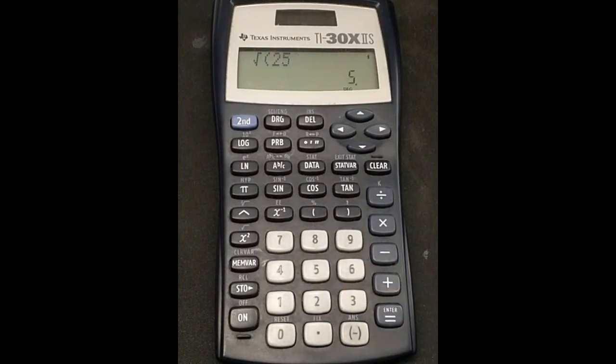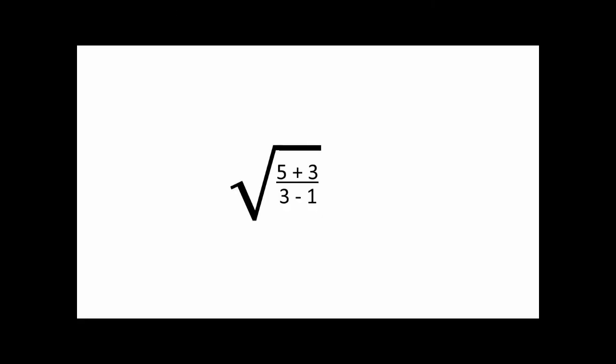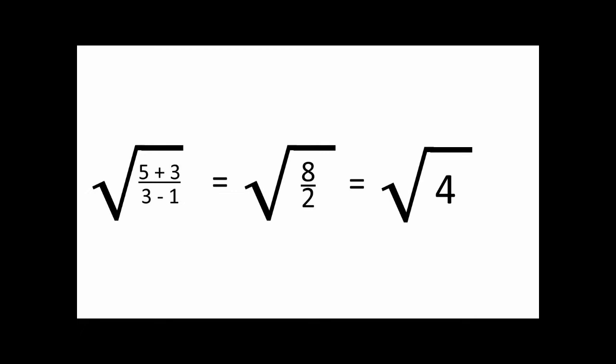If you have a more complicated problem, like the square root of 5 plus 3 divided by 3 minus 1, you will need to add extra parentheses to separate the numerator from the denominator.